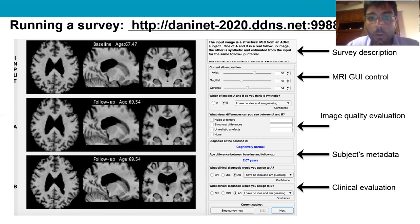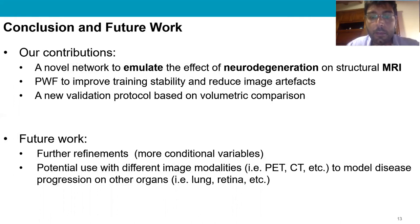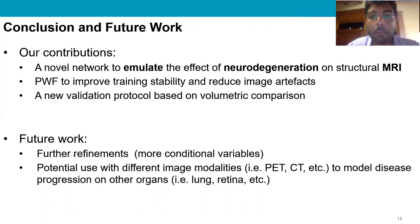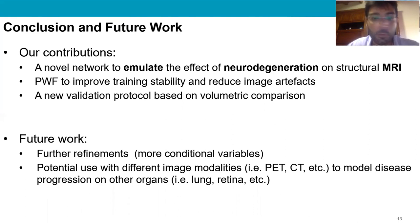In conclusion, in this work we have proposed and extensively evaluated a novel framework called 4D-DANINET for simulating neurodegeneration and aging. Our contributions can be summarized as follows: we designed a new deep neural network that enables the simulation of 4D MRI in both aging and disease; we proposed PWVF to improve training stability and reduce image artifacts; and we proposed a new validation protocol based on volumetric comparison to assess the accuracy of such a system. In our experiments, we demonstrated that 4D-DANINET generates accurate and realistic images, and our results outperform other methods for modeling neurodegeneration in aging and Alzheimer's disease.